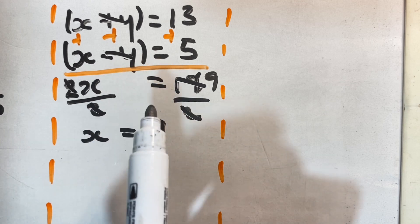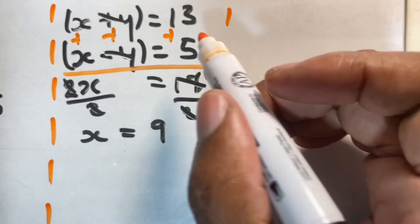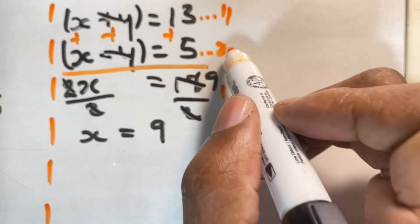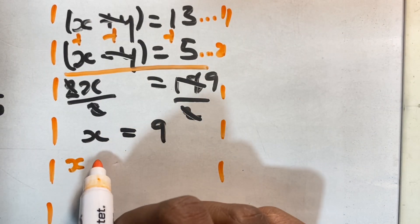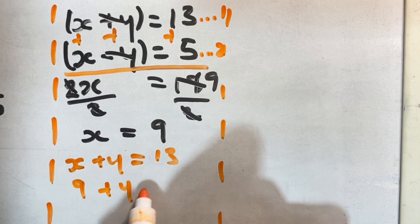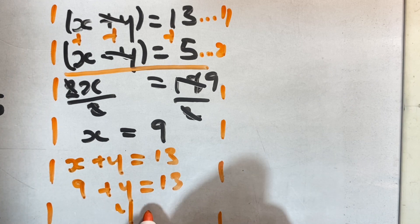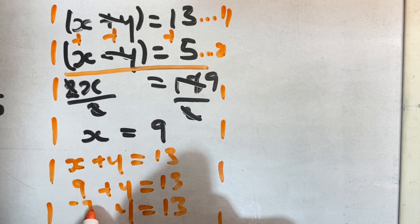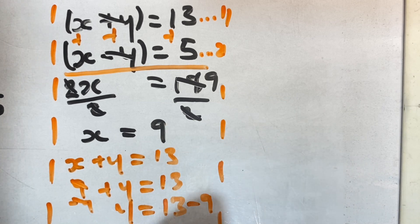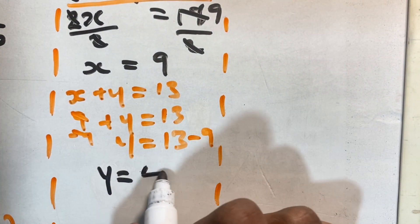So we have x is equal to 9, which means we can now solve for y. We have equation 1 and equation 2, and we can choose either to solve for y. Choosing equation 1, where x plus y is equal to 13, and substituting x equals 9, we have 9 plus y equals 13. Subtracting 9 from both sides, 9 cancels on the left and on the right we have 13 minus 9, which equals 4. So y is equal to 4.